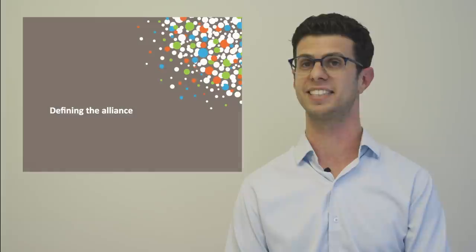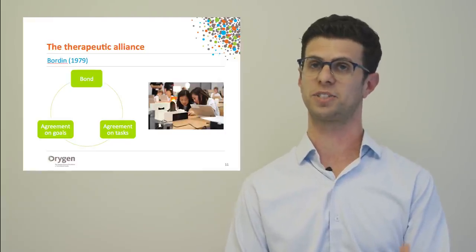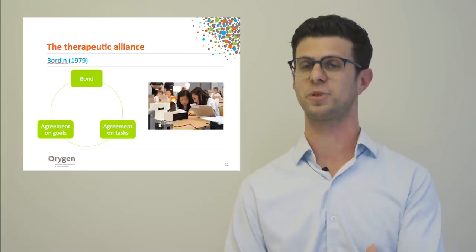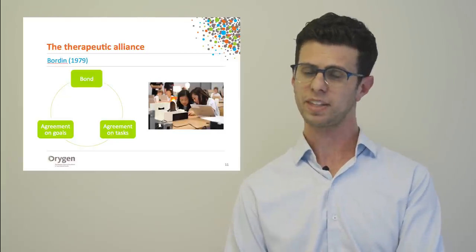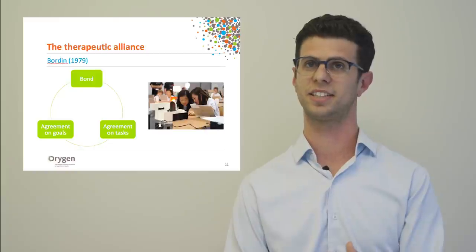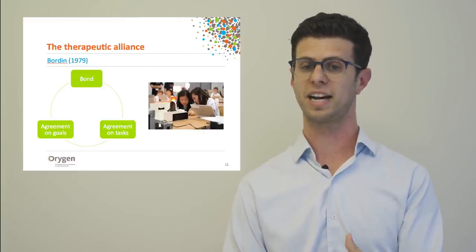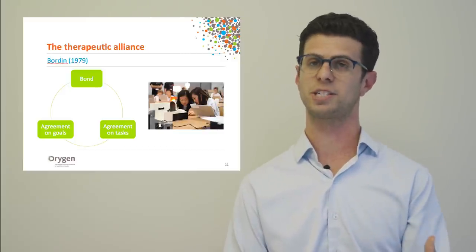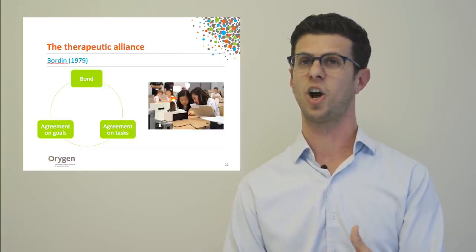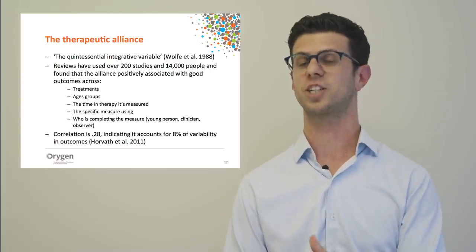Let's define the Alliance as an aspect of engagement. The Alliance was initially developed in the psychodynamic literature, but was really defined by Bordin in 1979 as a trans-theoretical concept — one that cuts across different therapies. Fundamentally, the therapeutic alliance is about a collaborative relationship between the young person and the clinician. Bordin defined three interrelated components: the bond (do they like and trust each other?), agreement on tasks (what activities make up the therapy hour?), and agreement on goals (what changes are being sought?).